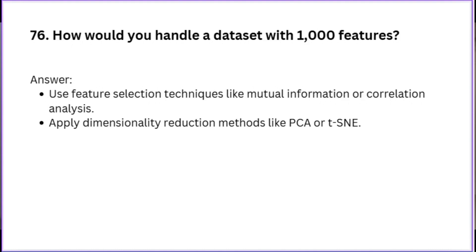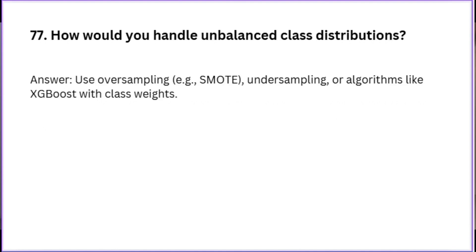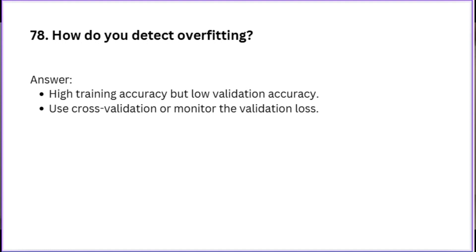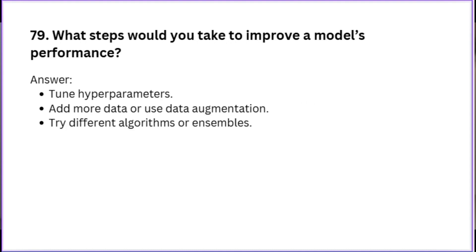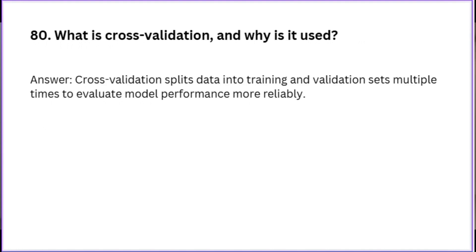How would you handle a dataset with 1000 features? What is non-balanced class distribution? How do you detect overfitting? What steps would you take to improve a model's performance? What is cross-validation and why is it used?